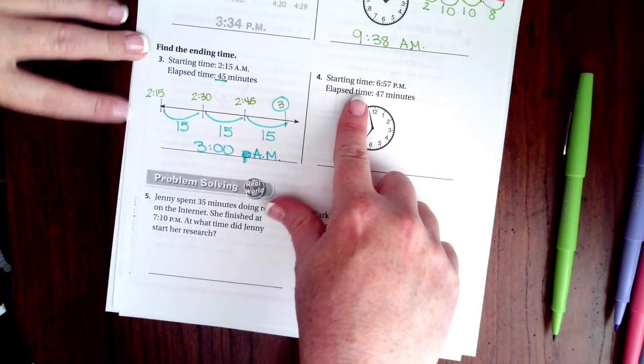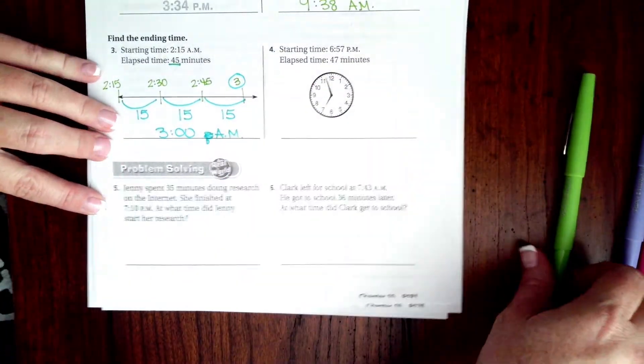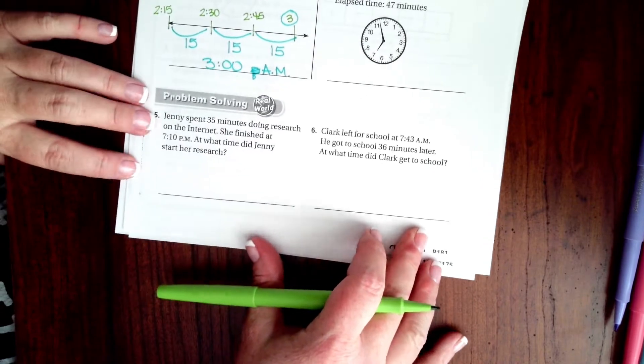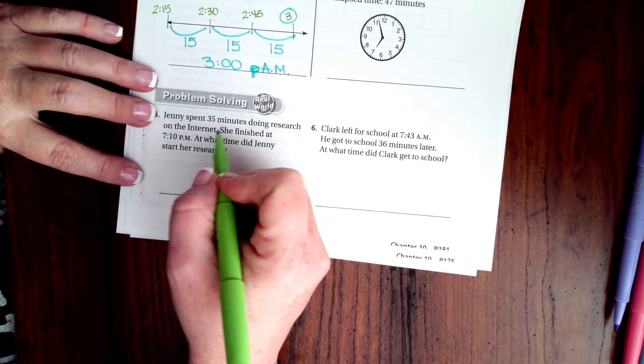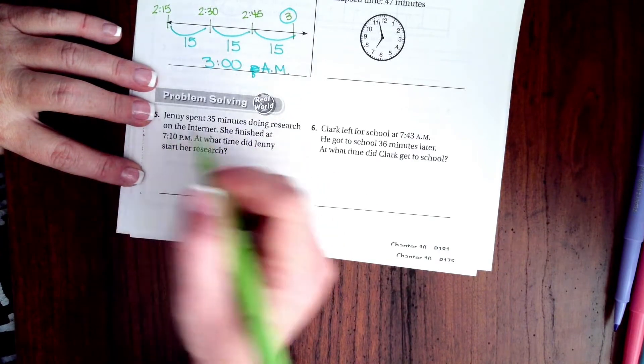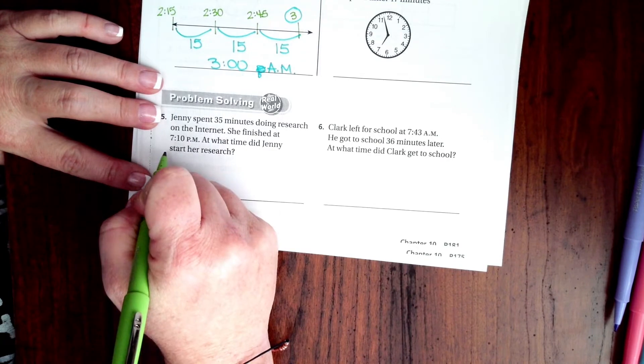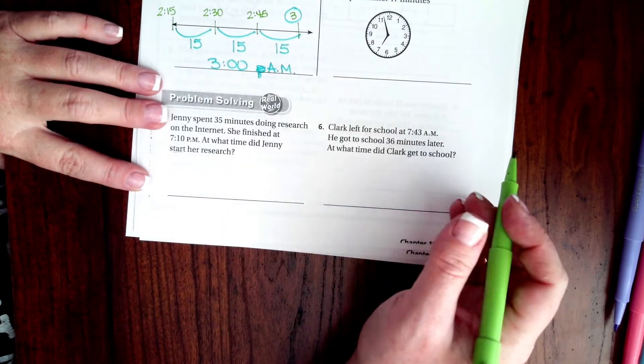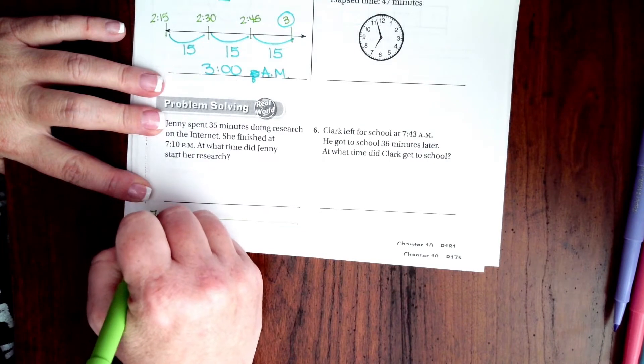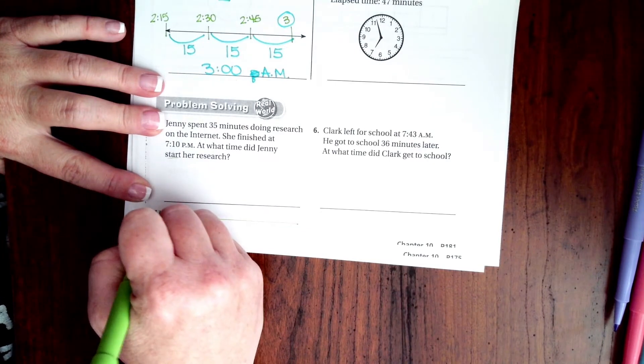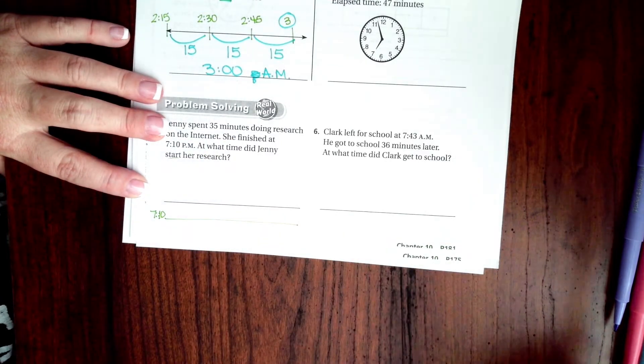You guys go ahead and try to do number 4. We're going to go down to number 5. It says, Jenny spent 35 minutes doing research on the internet. She finished at 7:10. So, we're going backwards in time because it wants to know what time did she start her research. So, I'm going to start at 7:10.